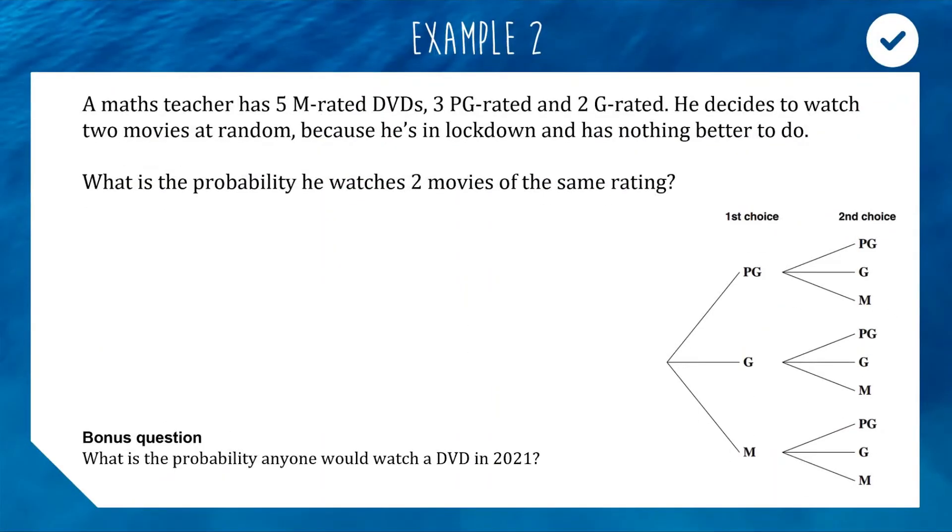On to the next one. We have a math teacher has five M rated DVDs, three PG and two G rated. He decides to watch two movies at random because he's in lockdown has nothing better to do. The question is, what is the probability he watches two movies that are the same rating? I want you to pause the video and think about how we'd answer this. It's a pretty similar style question to the one we just did.